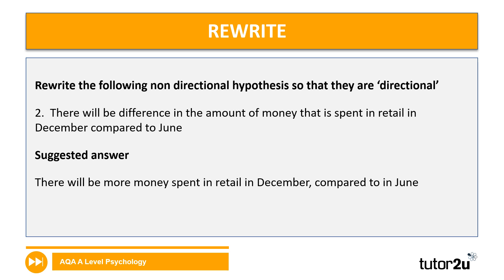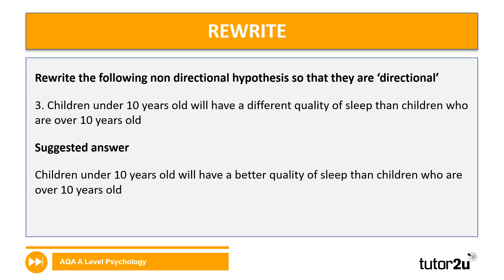Next one: we started with 'there will be a difference in the amount of money that is spent in retail in December compared to June,' and then changed it to directional by saying 'there will be more money spent in retail in December compared to June' — stating what the direction is. And for three: 'children under 10 years old will have a different sleep quality than children over 10 years old' becomes 'children under 10 years old will have a better quality of sleep than children who are over 10 years old.' Again, specifying the direction.